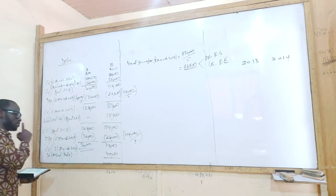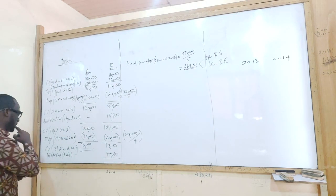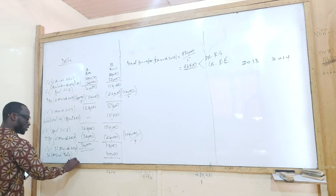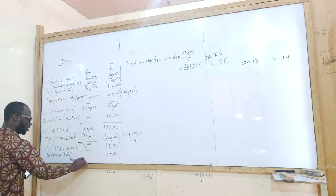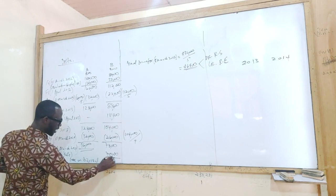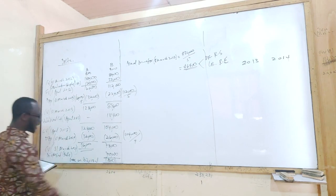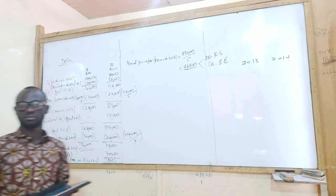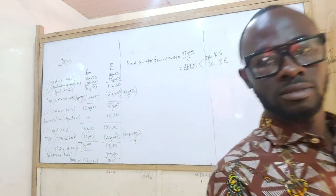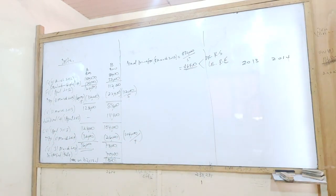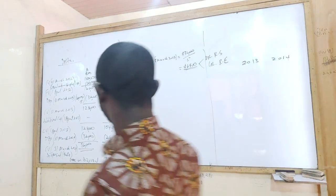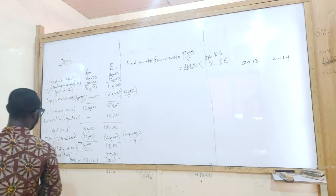So what's happening here? There is a loss on disposal. Is it a profit or a loss? It's a loss. We are making a loss, and how will that loss be treated? The loss will go to the income statement.